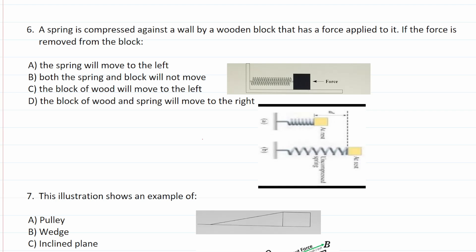Number six says a spring is compressed against a wall by a wooden block that has force applied to it. If the force is removed from the block, what will happen? So here's our diagram. We have force being applied to this block. Of course, we know that that is going to compress this spring. That is make it shorter. As you can see down here, it's not going to move left because again, we have this wall here that it's connected to. That said, if the force is removed, we can see that the spring is going to return to its uncompressed state, which means it's going to move to the right. And at the same time, as this spring uncompresses, this block is also going to move to the right. So this one is D, the block of wood and spring will move to the right.